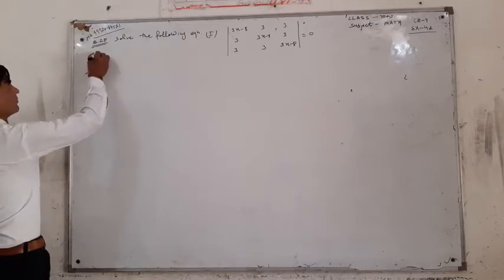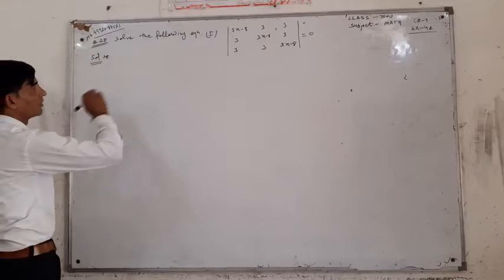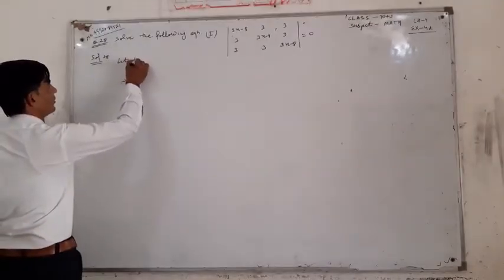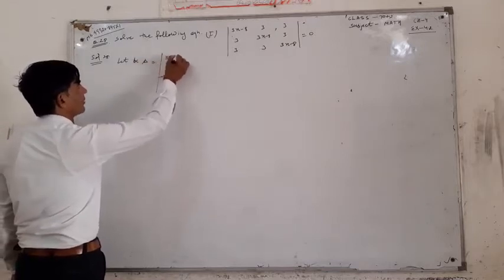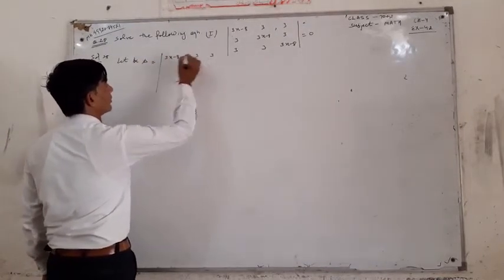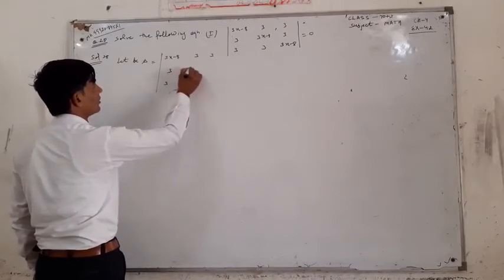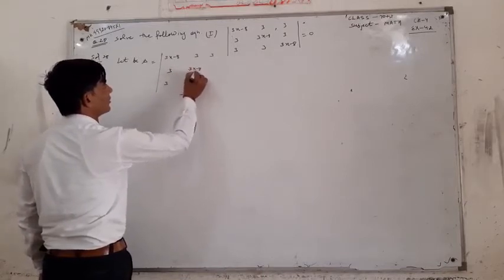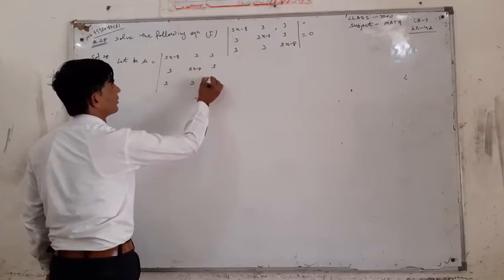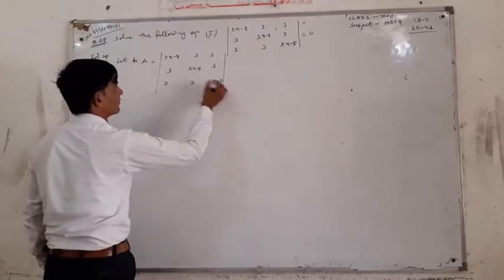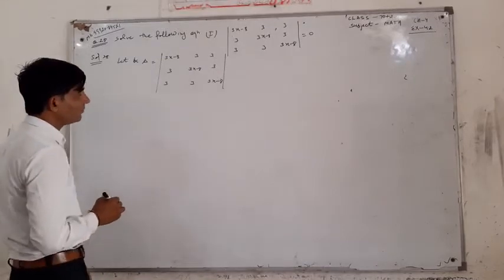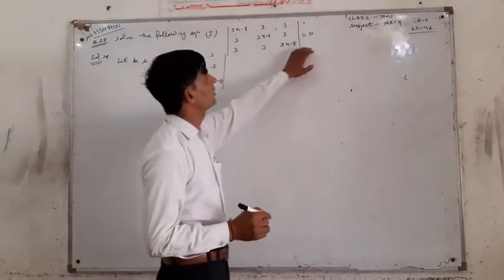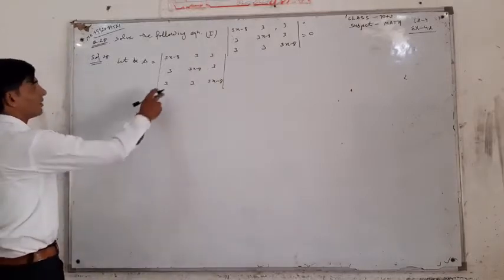Solution. Then the answer is 1.8. We can let D denote 3x-8. So 3x-8, 3, 3. This is our matrix. This is given, and this is equal. So how about this?